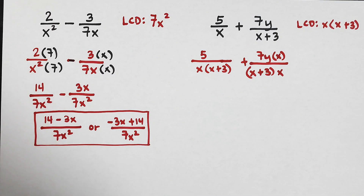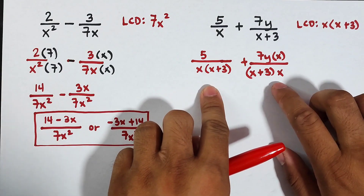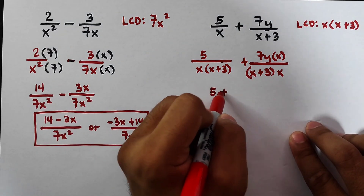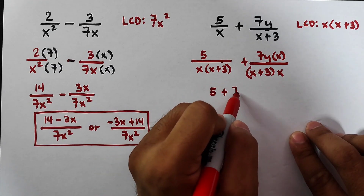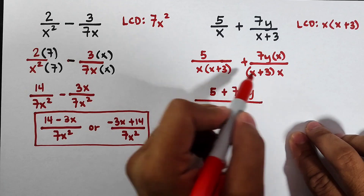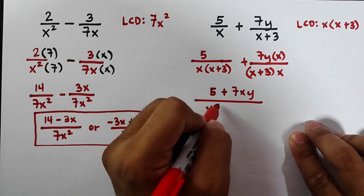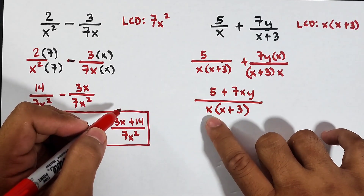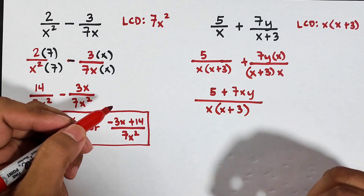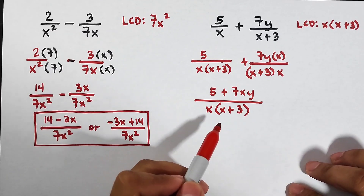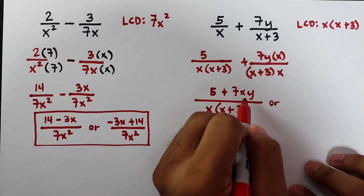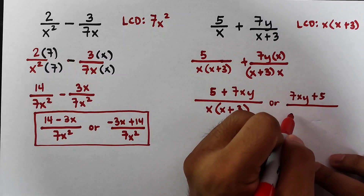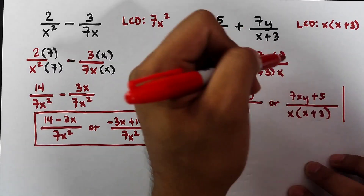Now the denominators match, so we add and simplify: 5 plus 7y times x is 7xy, giving us 5 plus 7xy over the common denominator x times x plus 3. I chose to express the denominator in factored form so we can see if anything cancels out. We can consider this the final answer, but if your teacher wants the variable term first, that would be 7xy plus 5 over x times x plus 3.